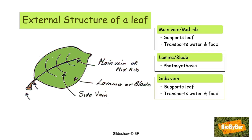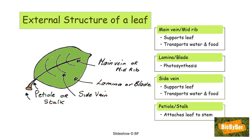Side veins are smaller than the main vein but also support the leaf. They contain vascular tissue — xylem and phloem — and therefore also transport water and food. Finally, there is the petiole or stalk. It is not the stem — the plant stem is an entirely different structure. The function of the petiole is to attach the leaf to the stem. The base of the leaf is where it is actually attached, and generally leaves a mark on the stem when the leaf falls.